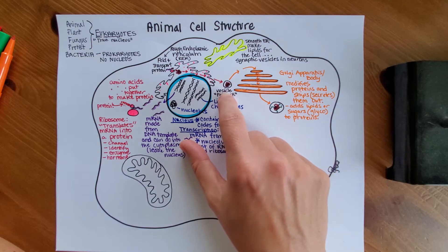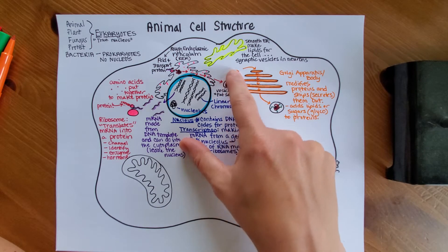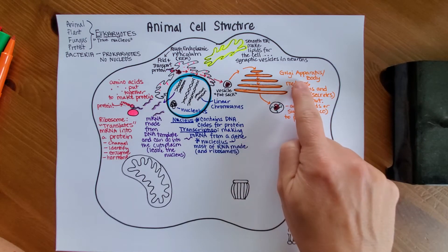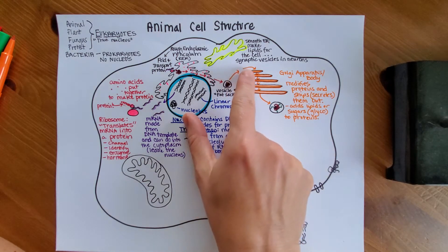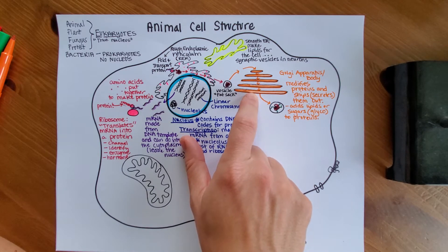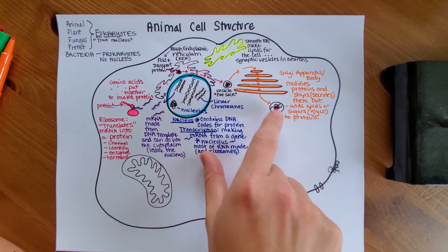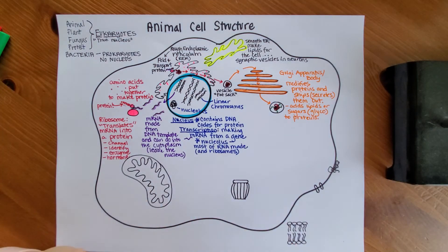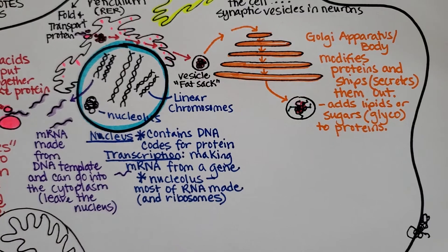A vesicle is just any kind of a fat sac that transports things around a cell. And then that vesicle containing that completed protein will go through another organelle called the Golgi apparatus or Golgi body. And as it goes through these membranes, it will have either lipids or sugars or both added to it.